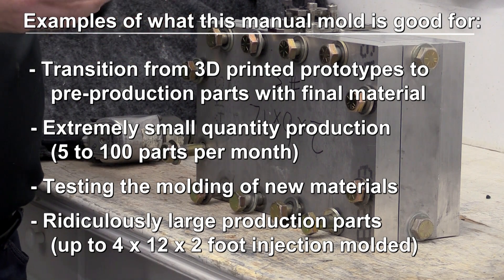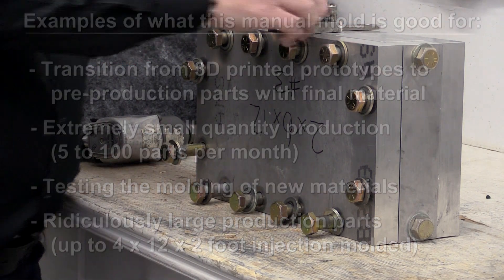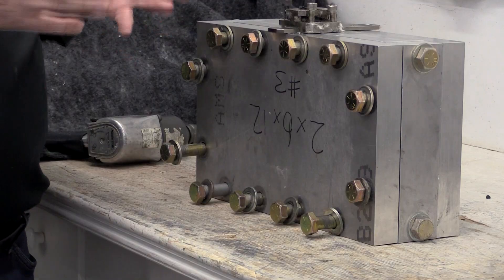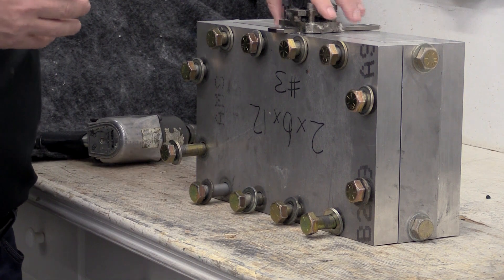Or if you only need 5 parts a month, this might be the most cost effective way. So you're going to spend maybe 10 minutes of your time taking it apart and putting it together. This gets you started now.